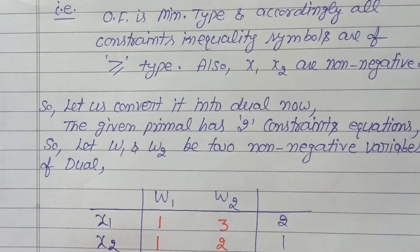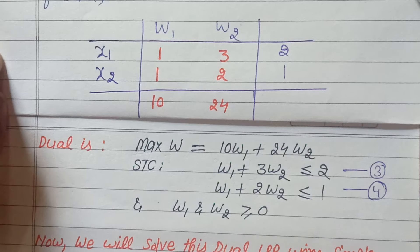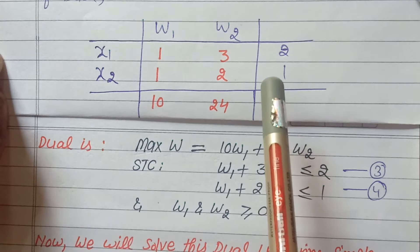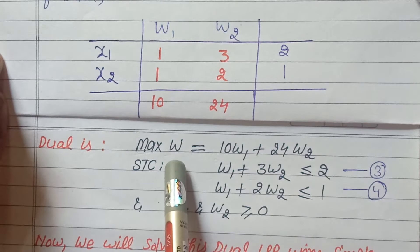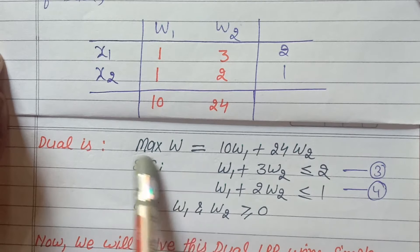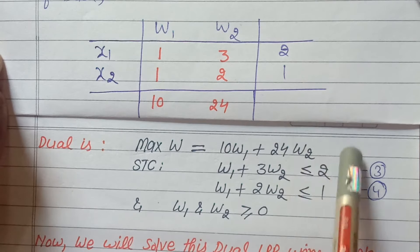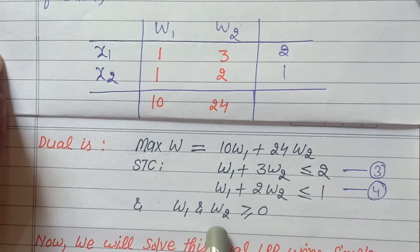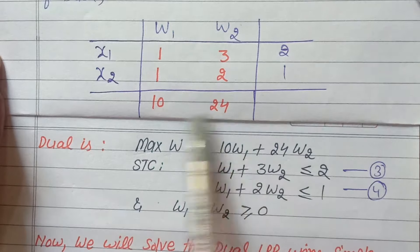Using this table we formulate the dual. Since the original objective function is minimization type, the dual becomes maximization type. The constraint inequality symbols are also changed accordingly. Both w1 and w2 are greater than or equal to zero.